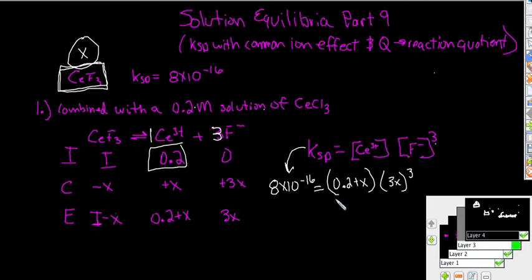So we just inserted our ICE table values into our Ksp expression. Now a couple of things that you can do is when you look at this you can see this plus x is going to make the math a little bit more complicated and you can do it if you want. But you should realize that this x is so little, it's literally nothing. And so we could actually just not worry about it. So if we do that let's just go ahead and get it out of there. So we're going to have 0.2 times 3x to the third power. So if we do that out we end up with x equals 5 times 10 to the negative 6th molarity or that's the molar solubility.